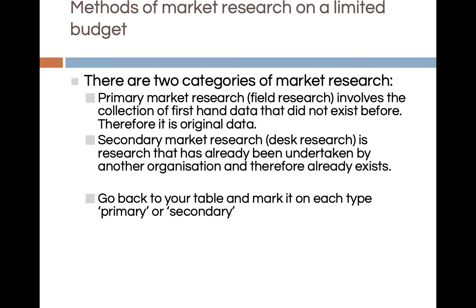Methods of market research on a limited budget — there are two types. Firstly, primary market research involves the collection of first-hand data that did not exist before; it is original data. This is the most expensive information a business can buy, but it can also be the most crucial in order to deliver a point of difference.